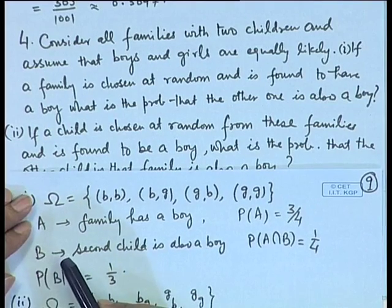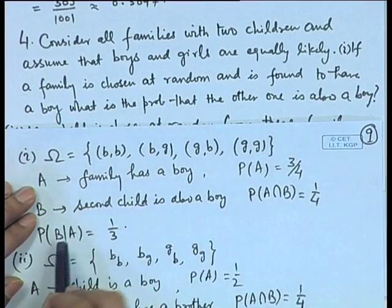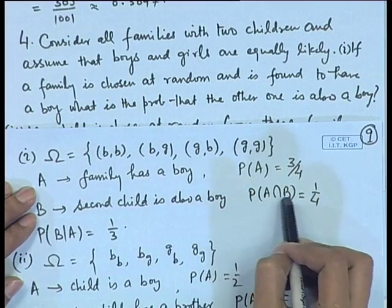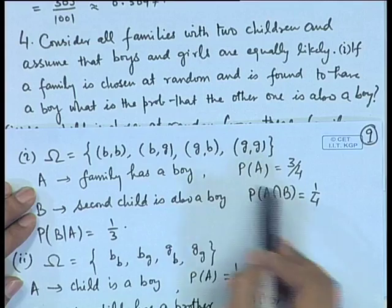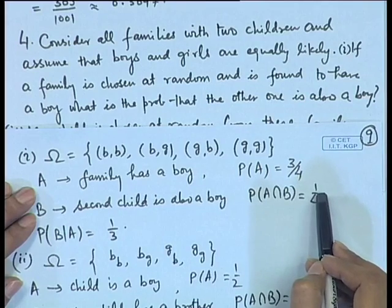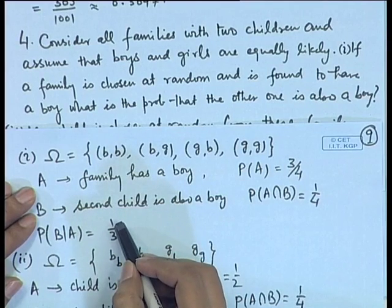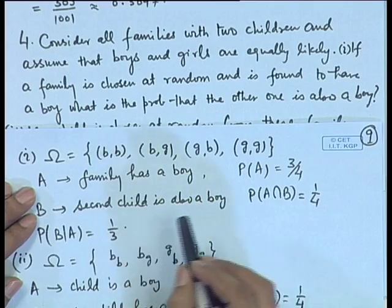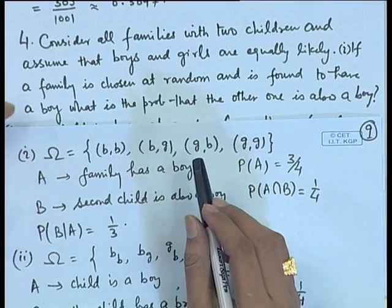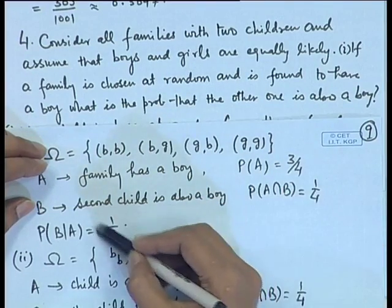If we define event B that the second child is also a boy, then the conditional probability of B given A is probability of A intersection B divided by probability of A. Probability of A intersection B corresponds to the possibility that both children are boys — only one possibility — so that probability is 1/4. Taking the ratio, we get probability of B given A as 1/3. That means, if in a randomly chosen family a child is found to be a boy, the probability that the other one is also a boy is 1/3.